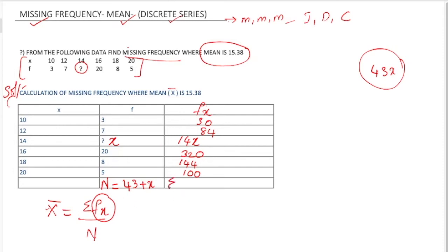We need the summation of f into x. Summation is nothing but adding. Add: 30, 84, 320, 144, 100 gives 678 plus 14x. I'm adding separately because it has a variable.